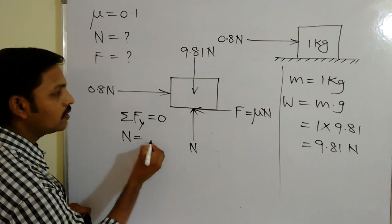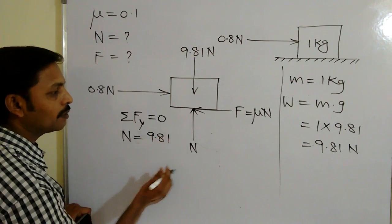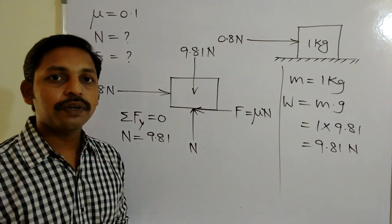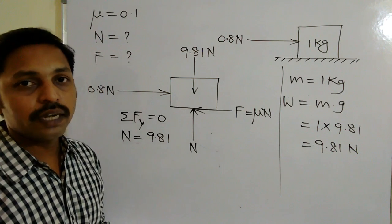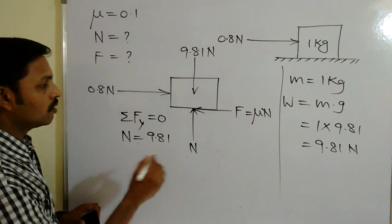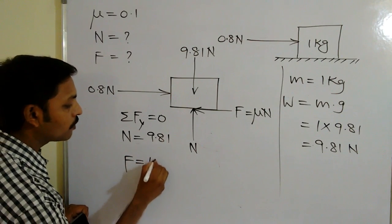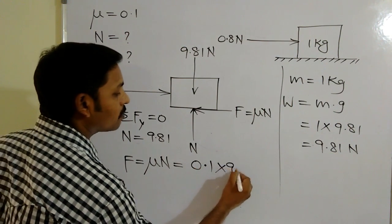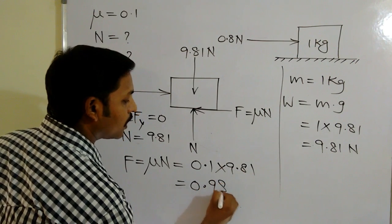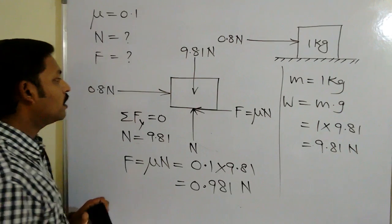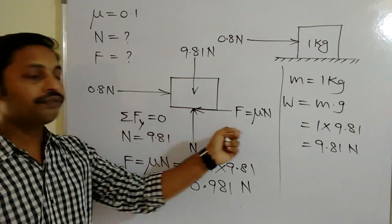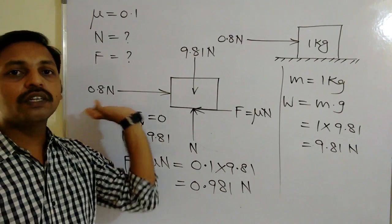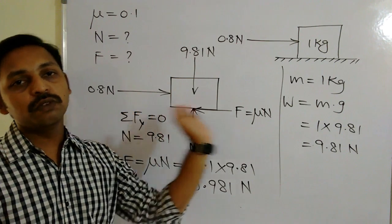Applying σFy = 0: N − 9.81 = 0, so N = 9.81 newtons. The frictional force F = μN = 0.1 × 9.81 = 0.981 newtons. The applied force is 0.8 newtons, but the frictional force is 0.981 newtons, which is greater than the applied force. Therefore, by the application of 0.8 newtons, the block is not able to move.